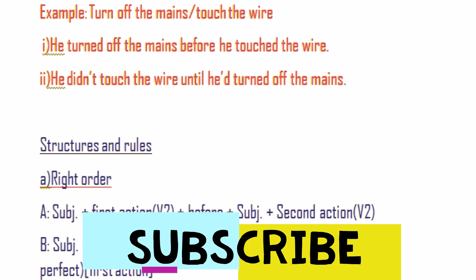For example: 'he turned off the mains' — he is the subject, turned off is the first action in V2, before, then subject 'he' again, second action 'toss the wire.' For option B, the structure is: subject + did not + second action (V1) + until + subject + had + V3 (past perfect) — that is the first action.